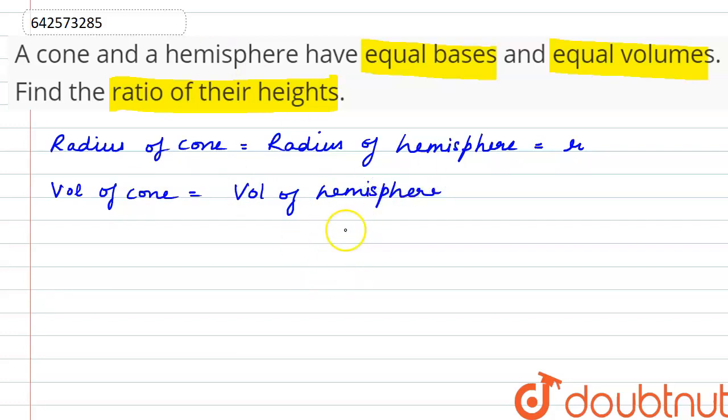And we know that the volume of cone is 1 by 3 pi R square H, and the formula for the volume of hemisphere is 2 by 3 pi R cube.